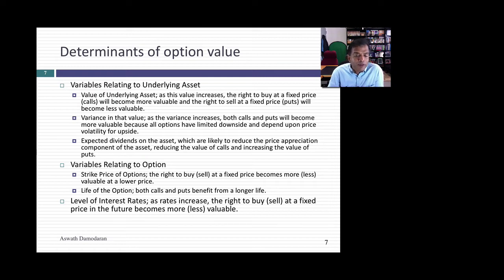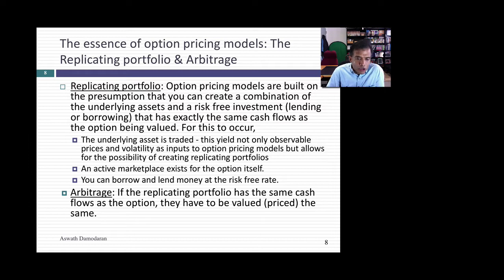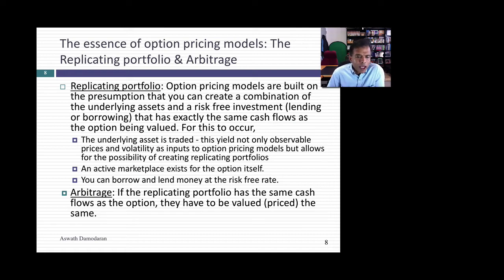Those are the six variables that drive the value of an option. Option pricing models can be incredibly complex, but all of them are built on two building blocks. The first is the notion of a replicating portfolio: you can create something that looks just like the option in terms of cash flows by combining the underlying asset and either borrowing or lending. To do this, the underlying asset needs to be traded, the option needs to be traded, and you need to be able to borrow and lend at the risk-free rate.